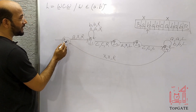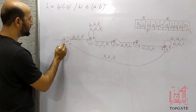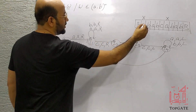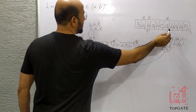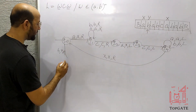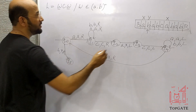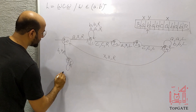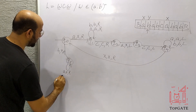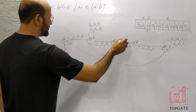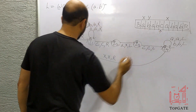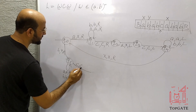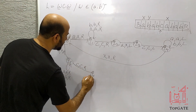Now the machine is at Q0 pointing to B. At Q0 I take a move for B: change it to Y and go right to state Q5. In the way I find A's and B's — take a self loop: keep A as A go right; keep B as B go right. All A's and B's are skipped and the pointer comes to this C. Take a move: keep C as C and go right to state Q6.